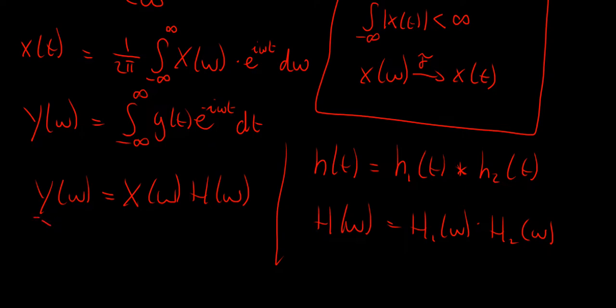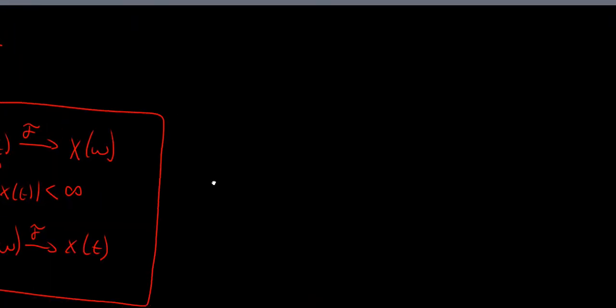A lot of properties about how to calculate from the time domain to the frequency domain with Fourier transformations are all written down in the tables at the end of the syllabus in the appendix. There are two tables and they are also on the cheat sheet.